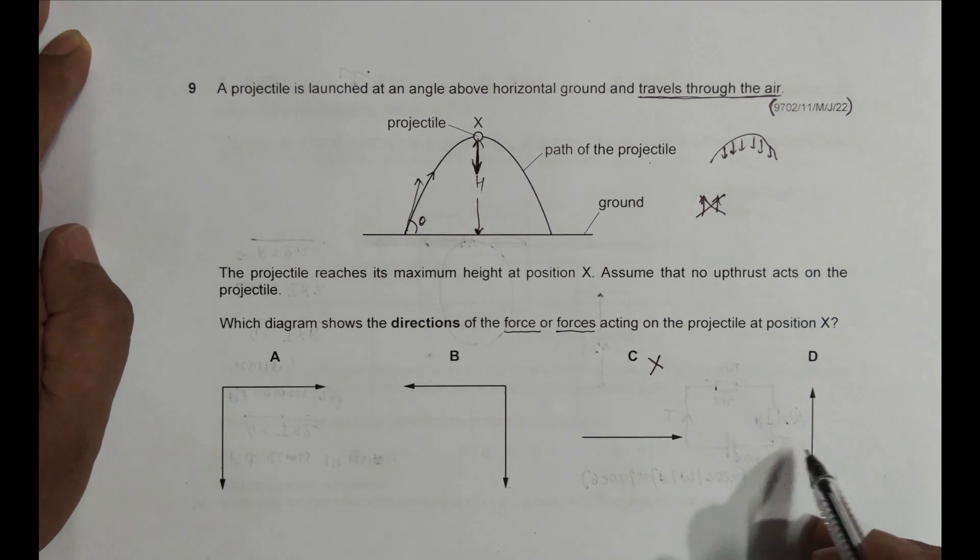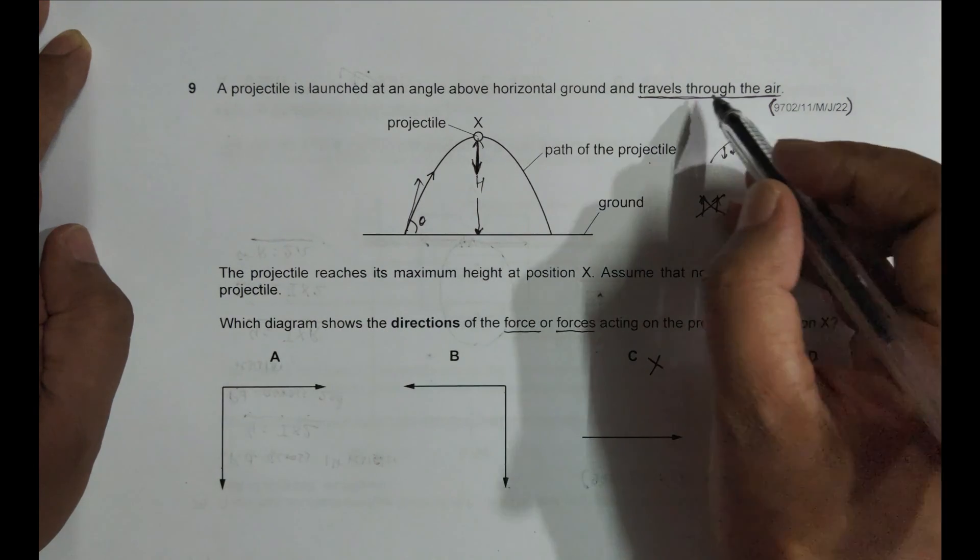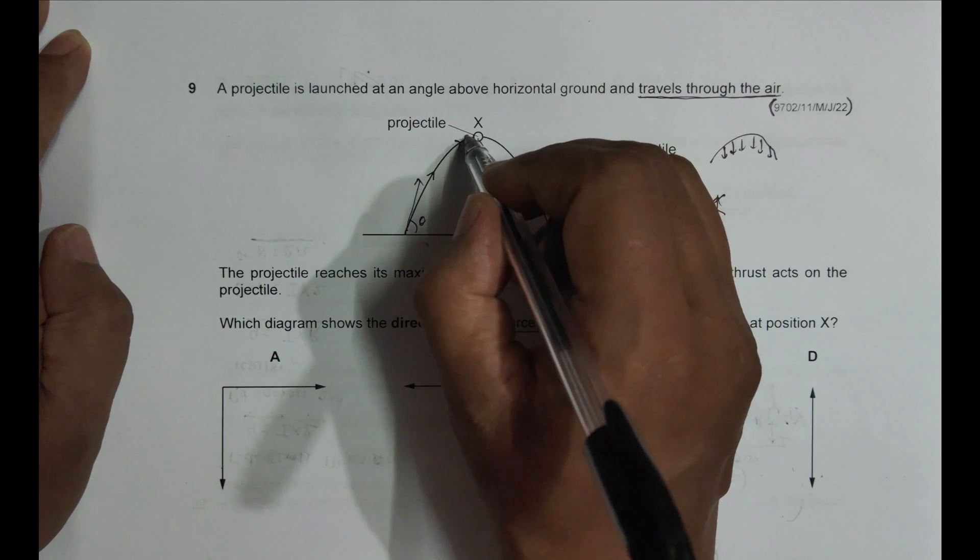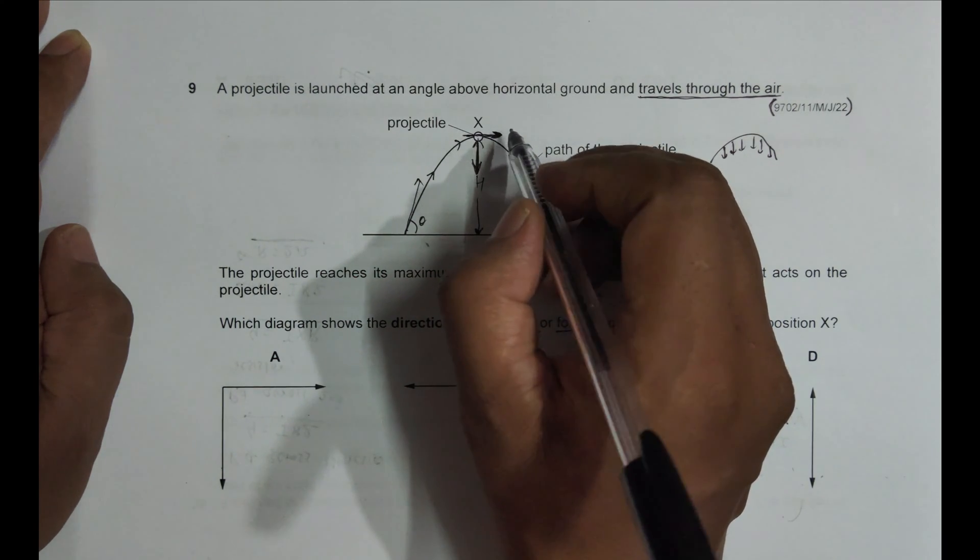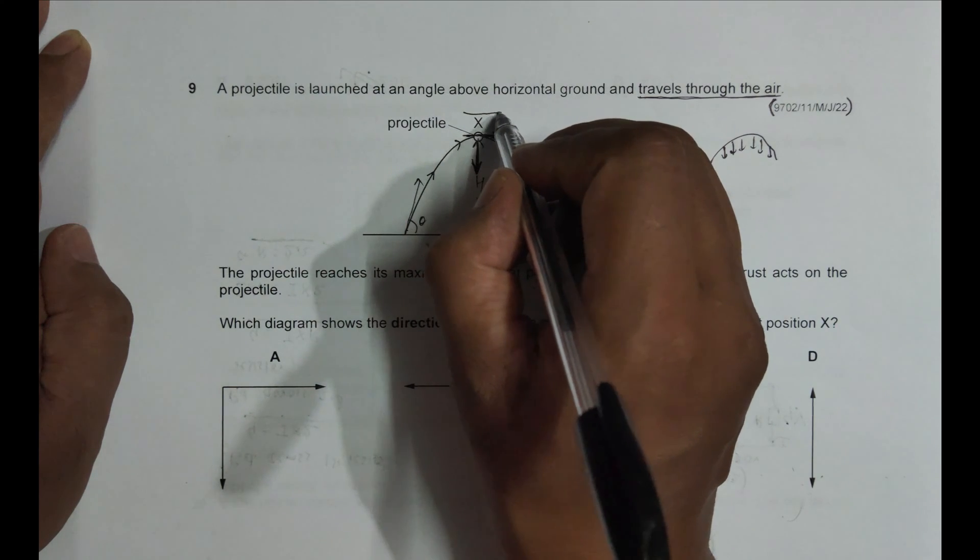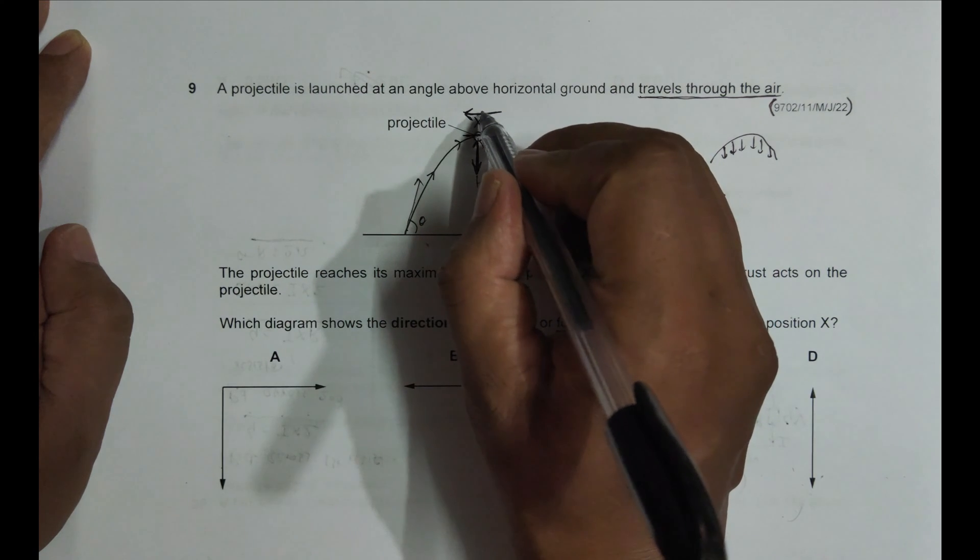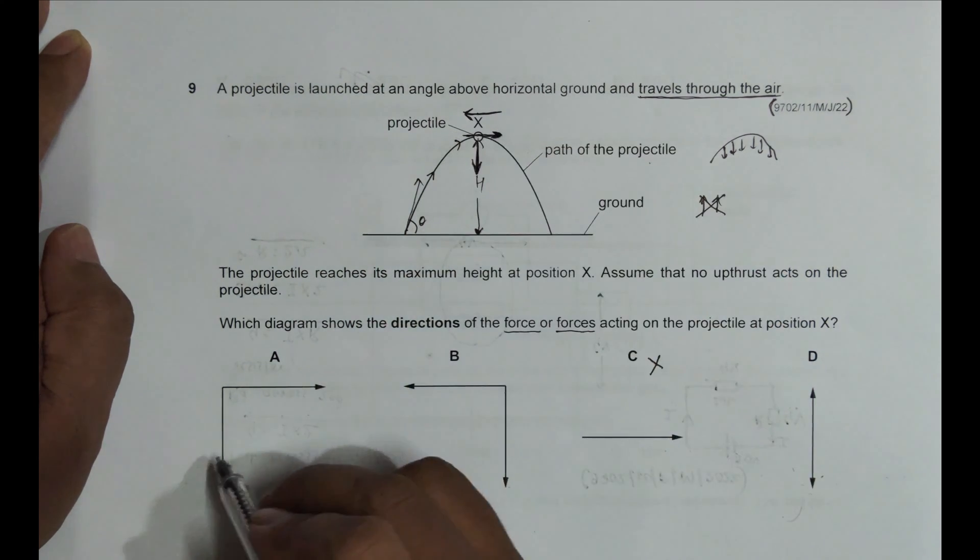It disqualifies because it doesn't have any downward force. And the next is, since it travels through the air, at this time its direction is like this, so the direction of opposing force should be like this. The force due to air, viscous force or drag force, the direction of the opposing force should be like this at this point.